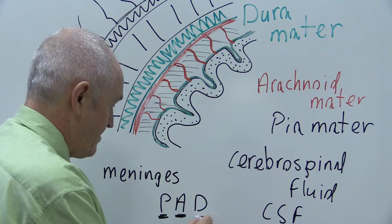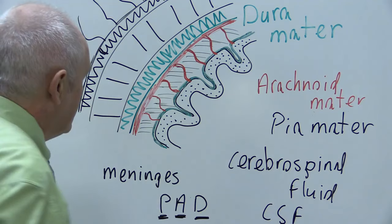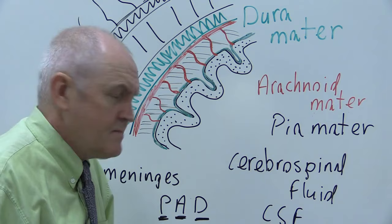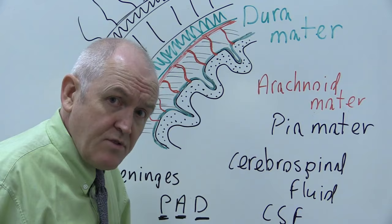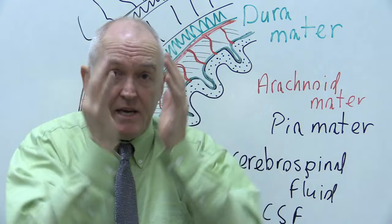The main component is the cerebrospinal fluid, a brilliant shock absorber contained in the subarachnoid space. You've probably got about 150 mils of cerebrospinal fluid now. It's cerebrospinal because it goes around the cerebrum, but then it goes down the spinal cord as well.